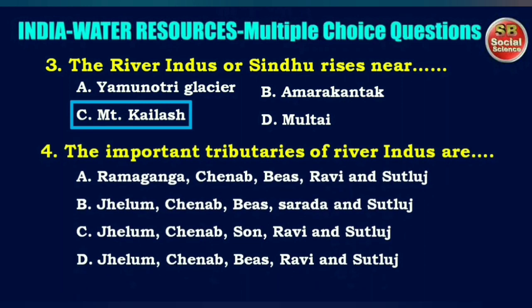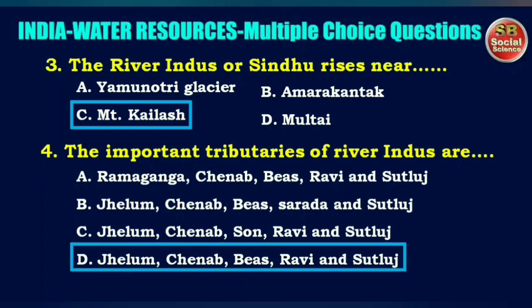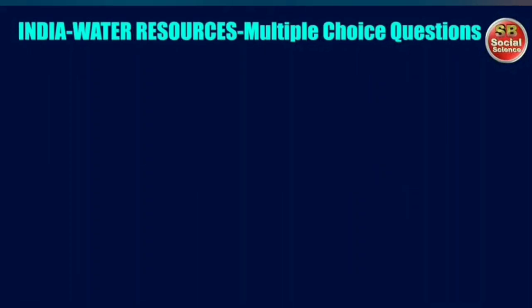The important tributaries of river Indus are — options are Ramaganga, Jhelum, Ghaghara, Beas, Ravi and Sutlej, or Jhelum, Beas, Ravi and Sutlej. The right answer is option D: Jhelum, Beas, Ravi and the Sutlej rivers are important tributaries of the Indus River.